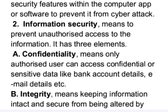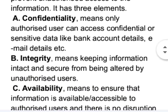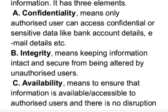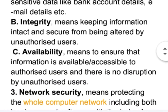Confidentiality means only authorized users can access confidential or sensitive data like bank account details, email details, etc. Integrity means keeping information intact and secure from being altered by unauthorized users. Availability means ensuring that information is accessible to authorized users and there is no disruption by unauthorized users.